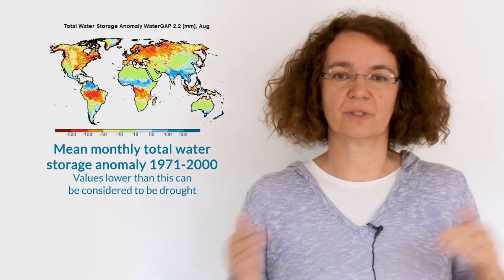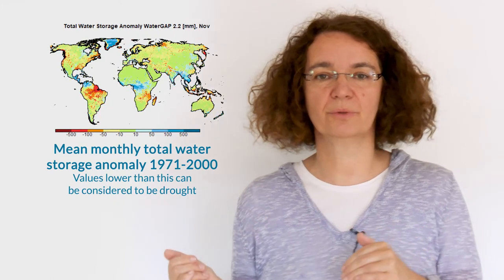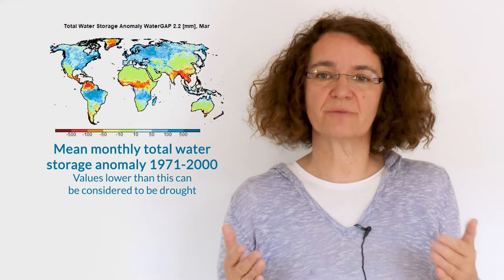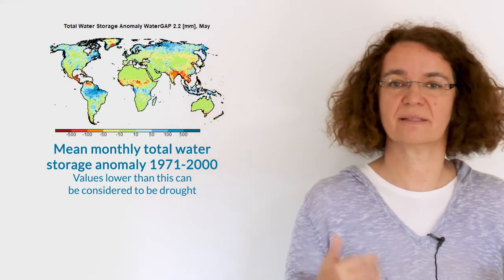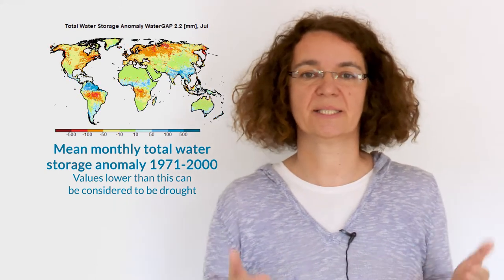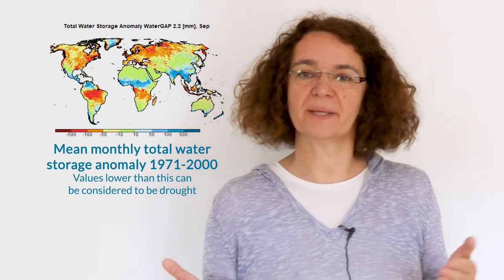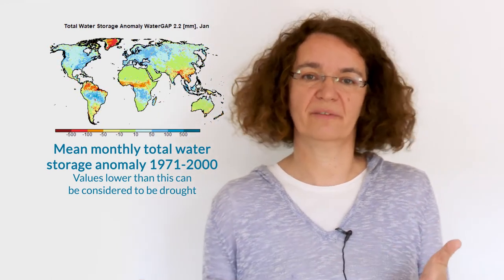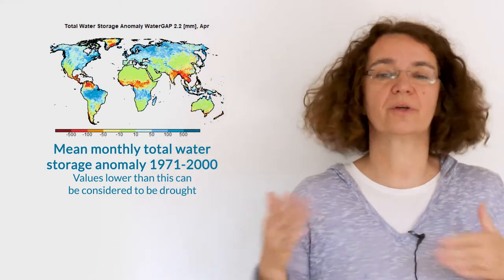In the animation of mean monthly total water storage you see in red months in which the long term mean monthly water storage is lower than the mean annual value. In blue you see the wet seasons occurring. As for streamflow the wet season for India is in the summer and for Spain it is the winter. Drought might be identified if the actual total water storage in a month is lower than the mean value that is shown in the animation.